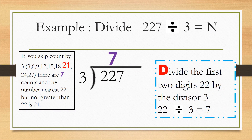Let's go to our second example: divide 227 by 3. Divide the first 2 digits 22 by the divisor 3. You have to take 2 digits here because you cannot divide the first digit 2 by 3, since 2 is less than 3. So you have to take 22. 22 divided by 3 equals 7. If you skip count by 3, there are 7 counts and the number nearest 22 but not greater than 22 is 21.